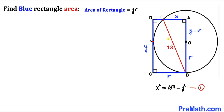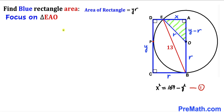Next, let's connect center O with point E, giving us right triangle EAO. We can observe that EO is the radius of the circle, so EO equals r. The side lengths of right triangle EAO are x, r, and y minus r.